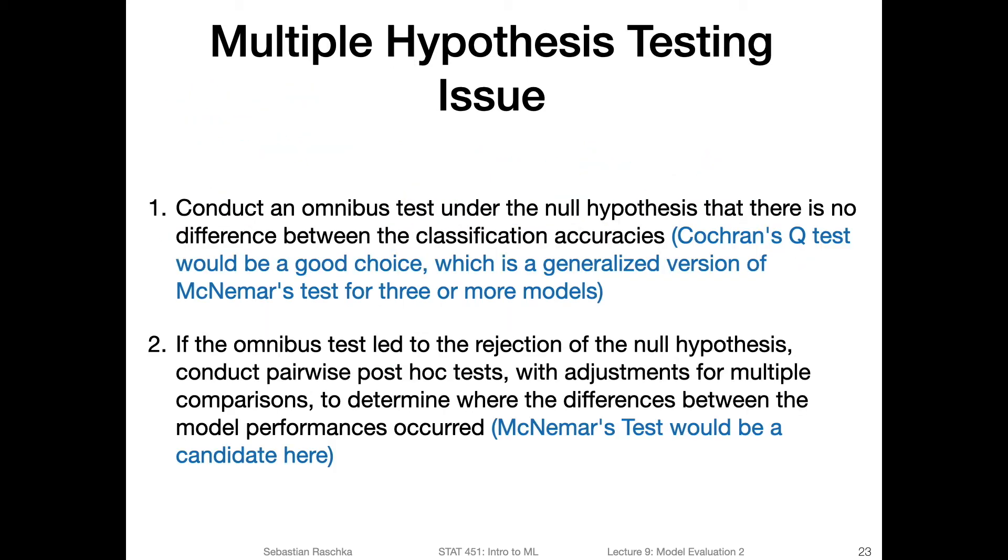So one test as the omnibus test that we can use could be, for example, Cochran's Q test, which is a generalized version of McNemar's test. I was about to show you how that works, but I think it's not super necessary here. It will just take 20 minutes and you won't learn that much useful. You see an equation.